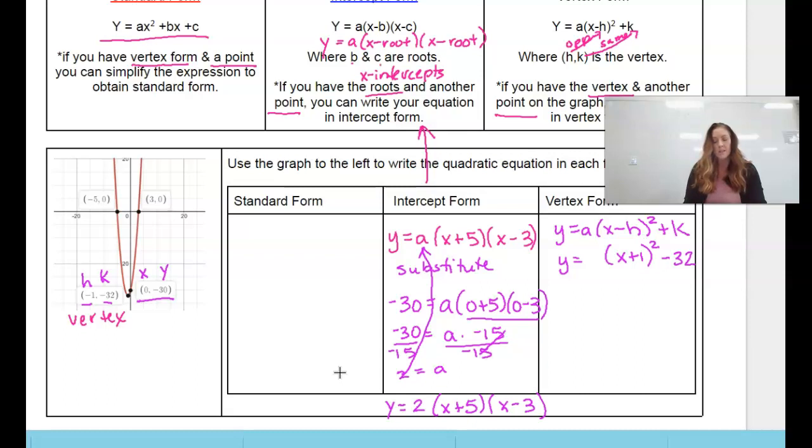If we would have started with vertex form, then I'd do the same thing and I'd plug in that 0, negative 30 for x and y, and we could solve for a. But a is going to be the same. So the process wouldn't be any different. We would just have to solve this equation for a as well. So a is 2. And then everything is in vertex form. So that one's done.